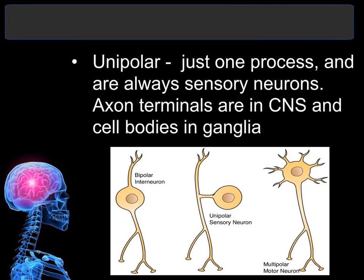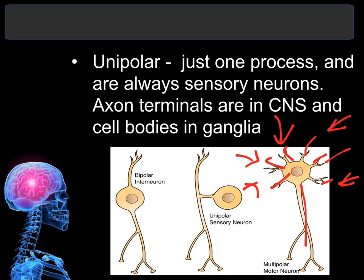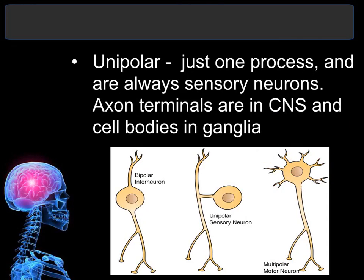Multipolar neurons, because they have multiple branches, can receive information from many different areas. They can also have branching axons and send information to multiple areas. Unipolar is named unipolar because they only have one projection coming off the cell body — one end is the dendrite and the other end is the axon. Like the bipolar, they can only receive information from one area, but they can carry that information to other areas.